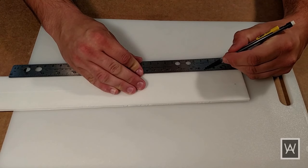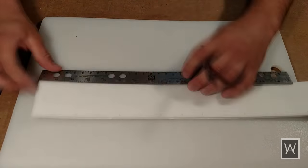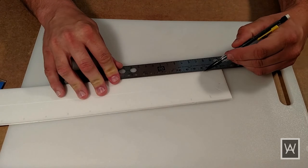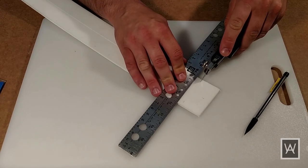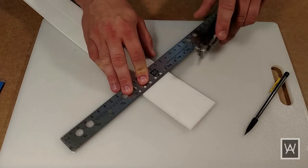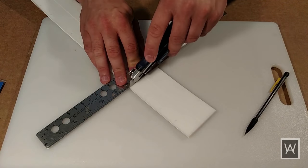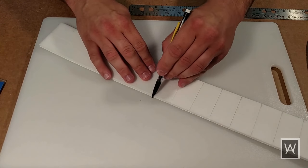On this strip, measure out 1 1⁄4 inch intervals. Score with your crafting knife, and then chase the score with a mechanical pencil to chamfer the edges and widen the groove.